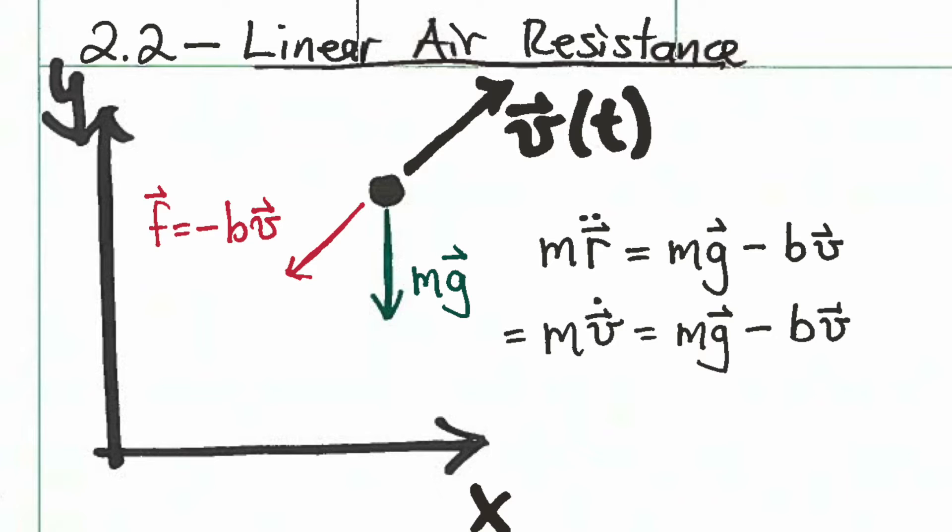The differential equation given by Newton's second law is shown on the right here. m r double dot as a vector is equal to acceleration from gravity and then the acceleration from air resistance. We can write, of course, r double dot as v dot, and you get that second equation on that second line there.